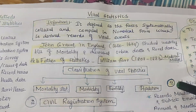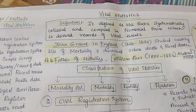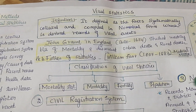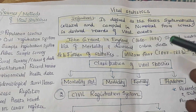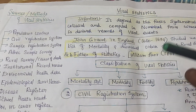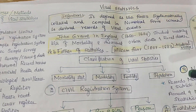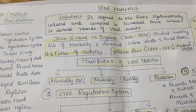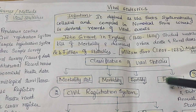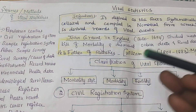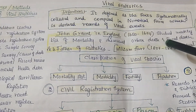We will see the definition of vital statistics. Vital statistics is nothing but the systematic collection and compilation of data — numerical form of data records of vital events. How to collect morbidity, mortality, and all these statistics systematically. John Graunt is the first person who studied vital statistics from 1620 to 1674. He was collecting how many were dying and how many were sick. Later on, it became vital statistics.